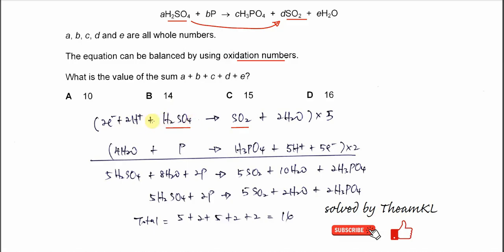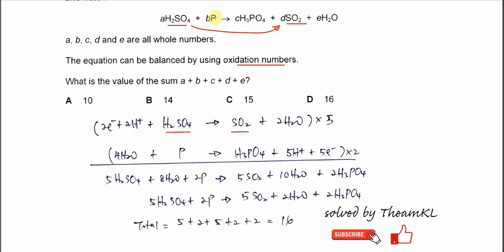Then we need to balance the charge. The right-hand side is neutral, so here must be neutral. We need to add 2 electrons here. This half equation is done. Now we need to form another half equation.